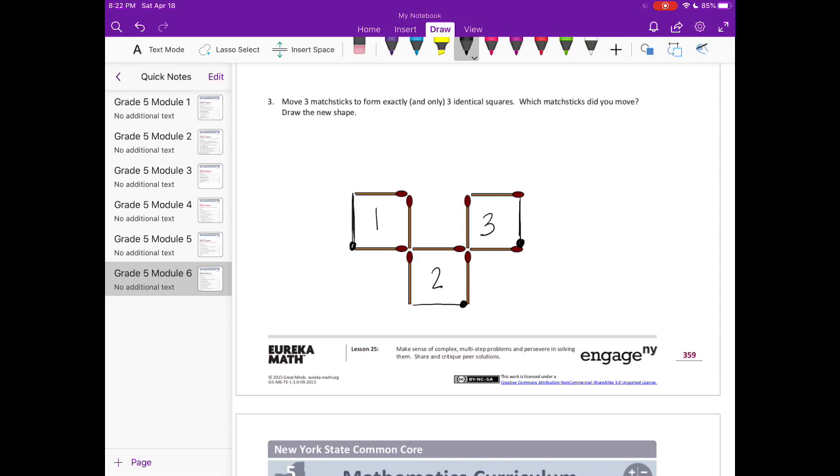And I'm going to move this one and put it down below right here. So I have one, two, three identical squares. There are other solutions, so see if you can come up with a different one than this solution.